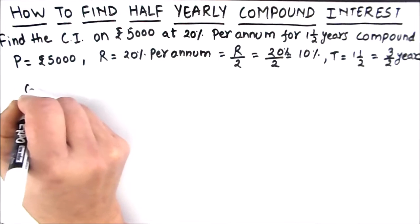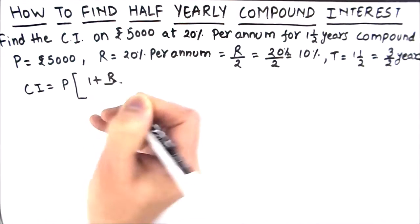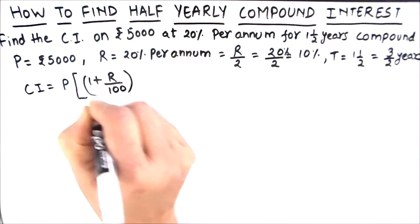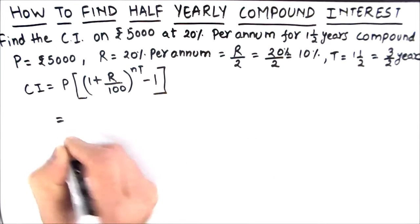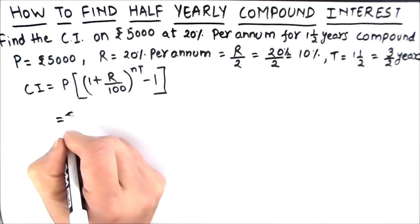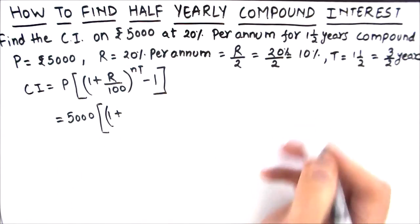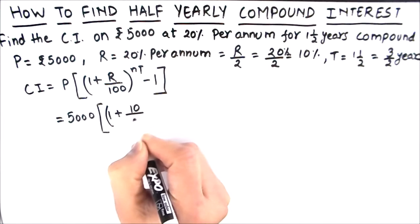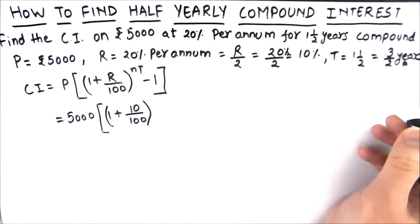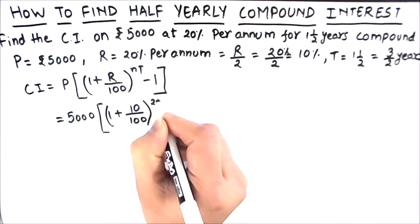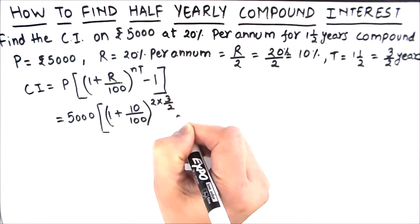The formula we are going to use is: CI = P × [(1 + r/100)^(nt) − 1]. Let's put the values in. P = 5,000, r = 10%, so this is 10/100. n = 2 because there are two half years in a year, and t = 3/2, giving us 2 × (3/2) = 3. So the exponent is 3, and we subtract 1.